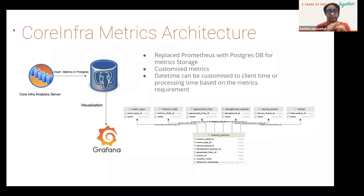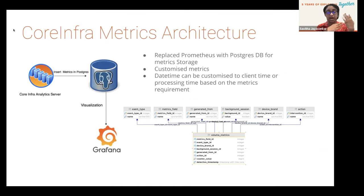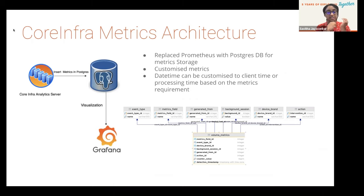We tried a couple of other methods using remote storage with GCP BigQuery and Spanner, but we came across limitations from either quota or API rate usage. The successful method we implemented was attaching Postgres as a time series database instead of Prometheus to store the metrics. We could customize the metrics and the datetime to any timestamp we wished — either the client timestamp or the processing timestamp — as well as customize metrics based on any number of parameters.